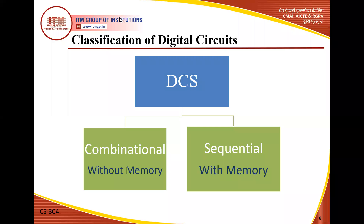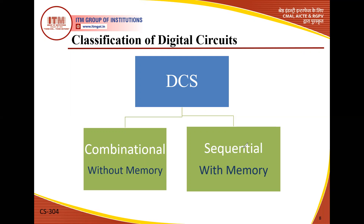Classification of digital circuits: they are broadly divided into two categories — combinational and sequential. Combinational circuits are without memory; their output depends entirely on the present input, not past inputs. Sequential circuits have memory elements; output depends on both present and past inputs. Examples of combinational circuits include half adder, full adder, subtractor, and multiplexer. Flip-flops and registers are memory elements that fall under sequential circuits.